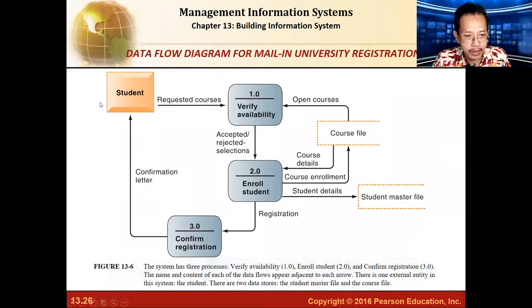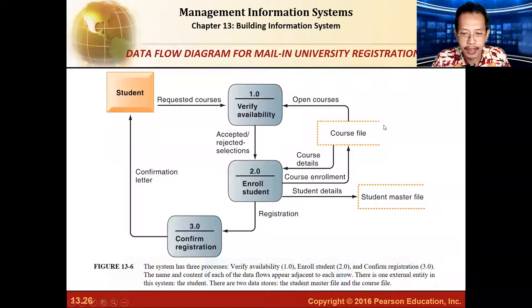Here's an example. You can see the student here — this is an entity. This box here is a process, so you have three processes. You also have an entity, a database or data store, and the arrows show how the data flows and what happens with the data.